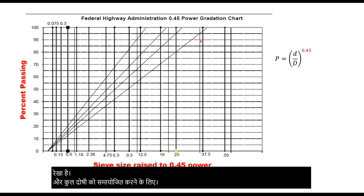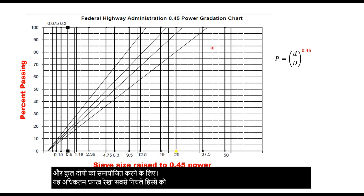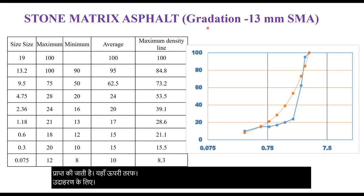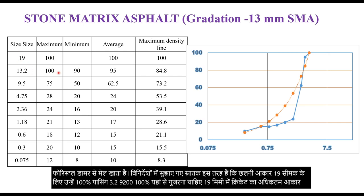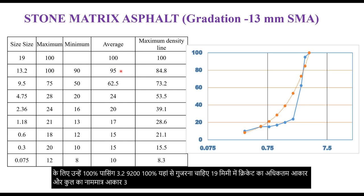This maximum density line is obtained by connecting the lowermost point on the left side to the nominal maximum size of aggregate on the upper side. For example, for a stone mix, the gradation suggested in specifications is as follows: for sieve size 19 mm, it should be 100% passing; for 13.2 mm, 90 to 100% passing. Here the maximum size of aggregate is 19 mm and nominal size of aggregate is 13.2 mm because less than 10% will be retained on this size.